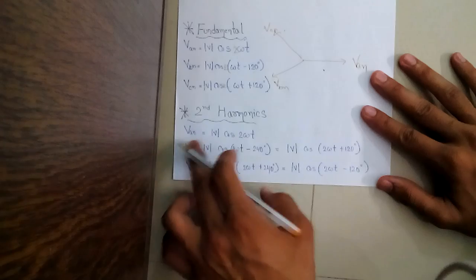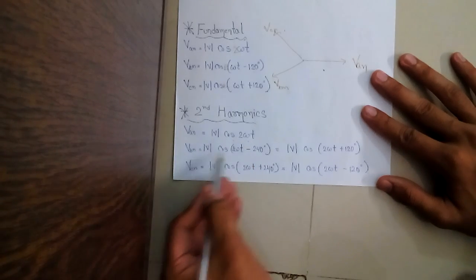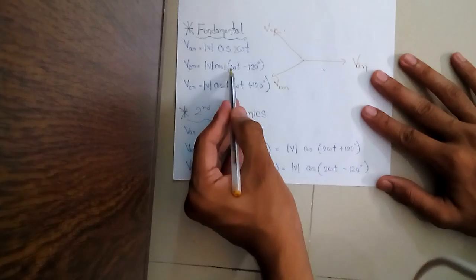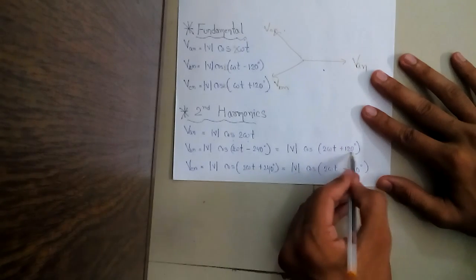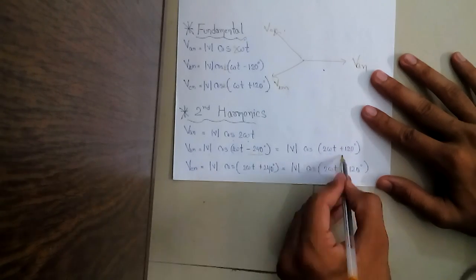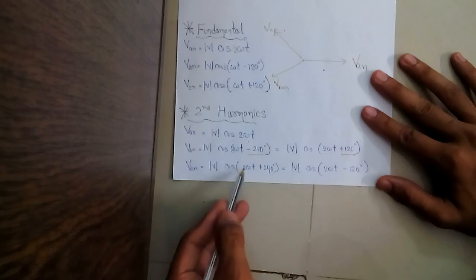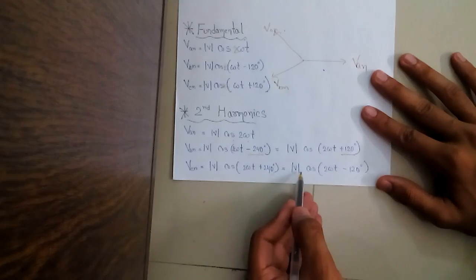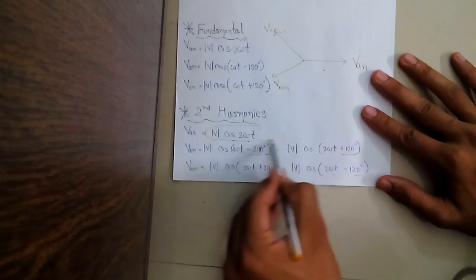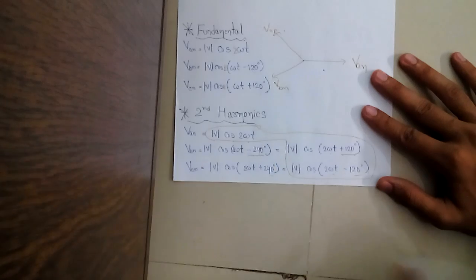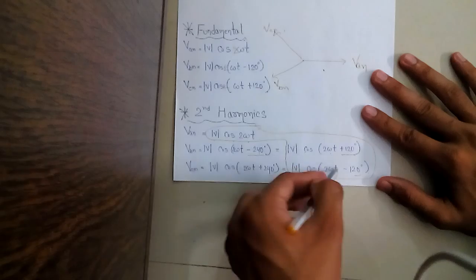So my second harmonics come out to be: V_An = V cos(2ωt), V_Bn = V cos(2ωt − 240°), which is equivalent to V cos(2ωt + 120°). Similarly, V_Cn = V cos(2ωt + 240°), which comes out to be equal to V cos(2ωt − 120°). What I am seeing here is that looking at all three, I am again getting a three-phase waveform which is 120° apart.